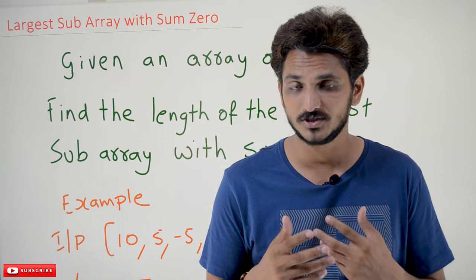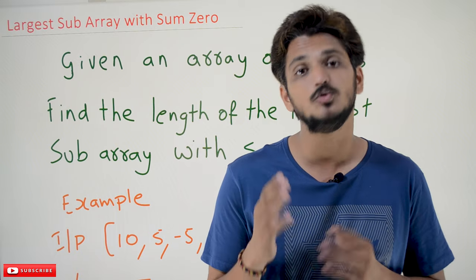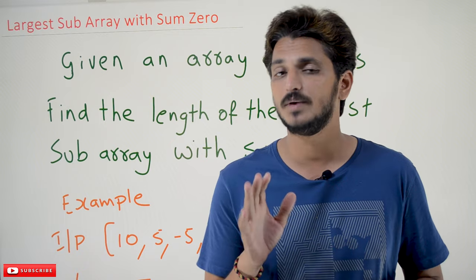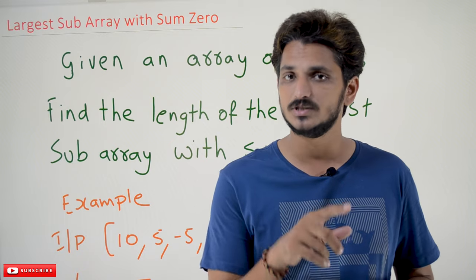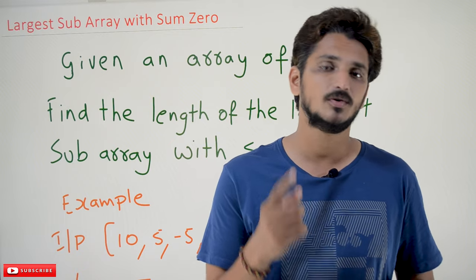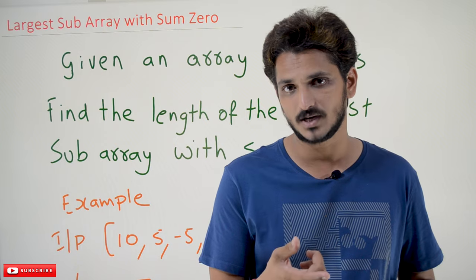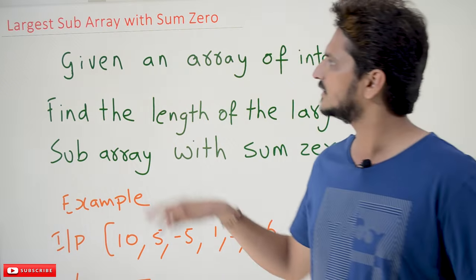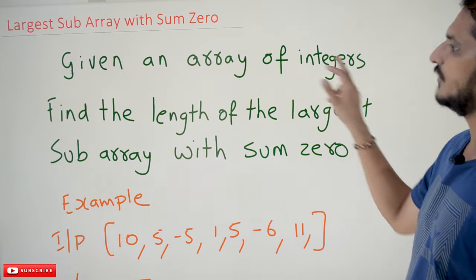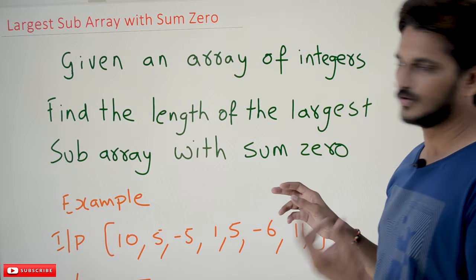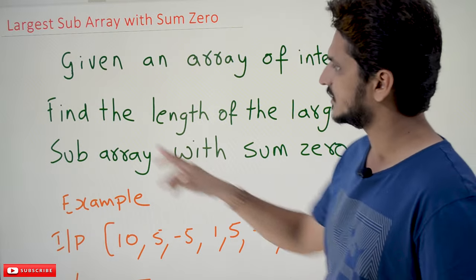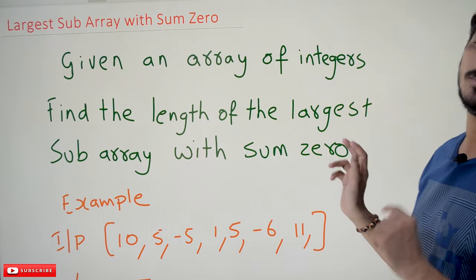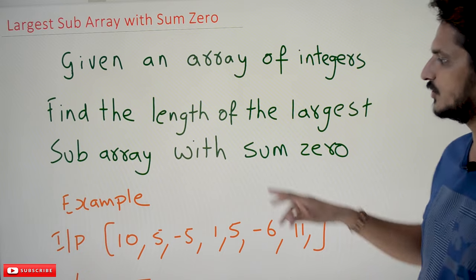The explanation is completely based on the assumption that you already have some basic coding knowledge. Coming to today's class: given an array of integers, find the length of the largest subarray with summation zero — that is what we need to identify.